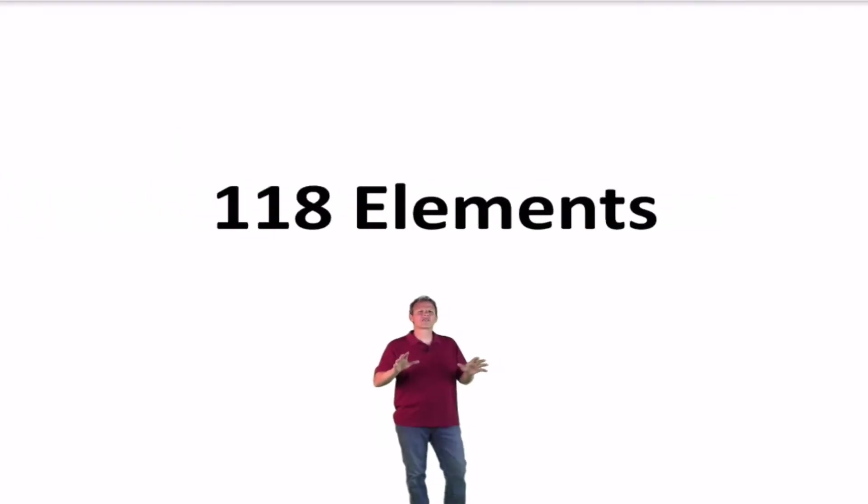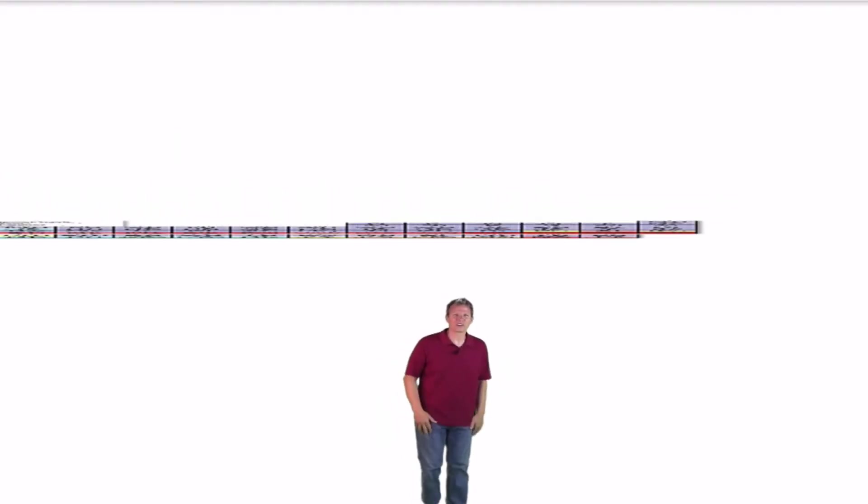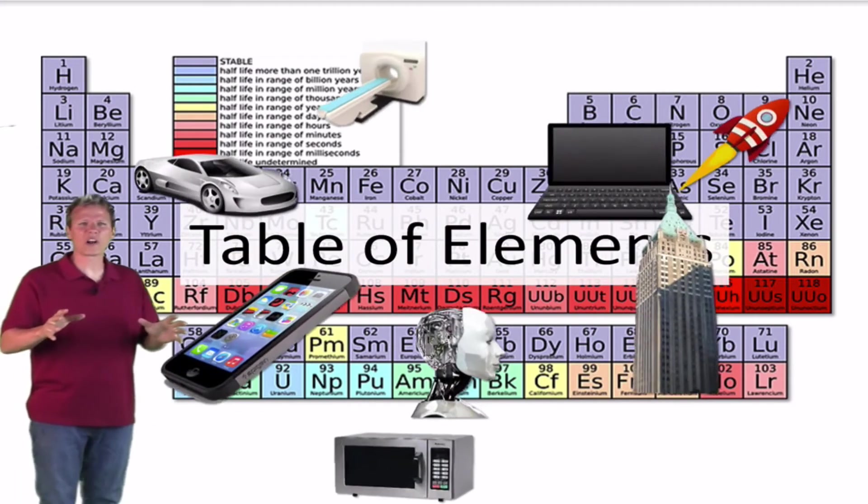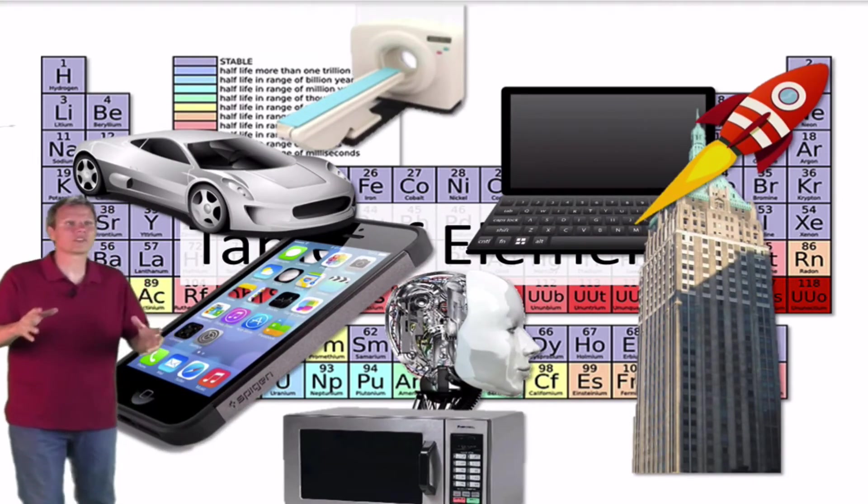Science has discovered 118 elements. You can see all these elements in something called the periodic table of elements. And out of just these 118 elements comes everything.